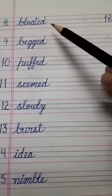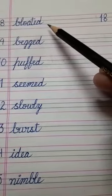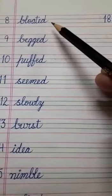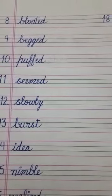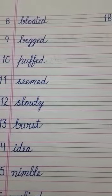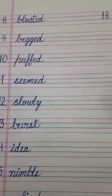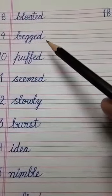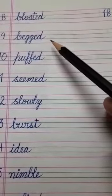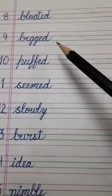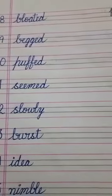Number 8 is bloated, B-L-O-A-T-E-D, bloated. Bloated ka matlab hota hai phula hua, swollen — suja hua ya phula hua. Number 9 is begged, B-E-G-G-E-D, begged. Begged ka matlab hota hai gidgidana ya bheek maangna — to plead or beg.